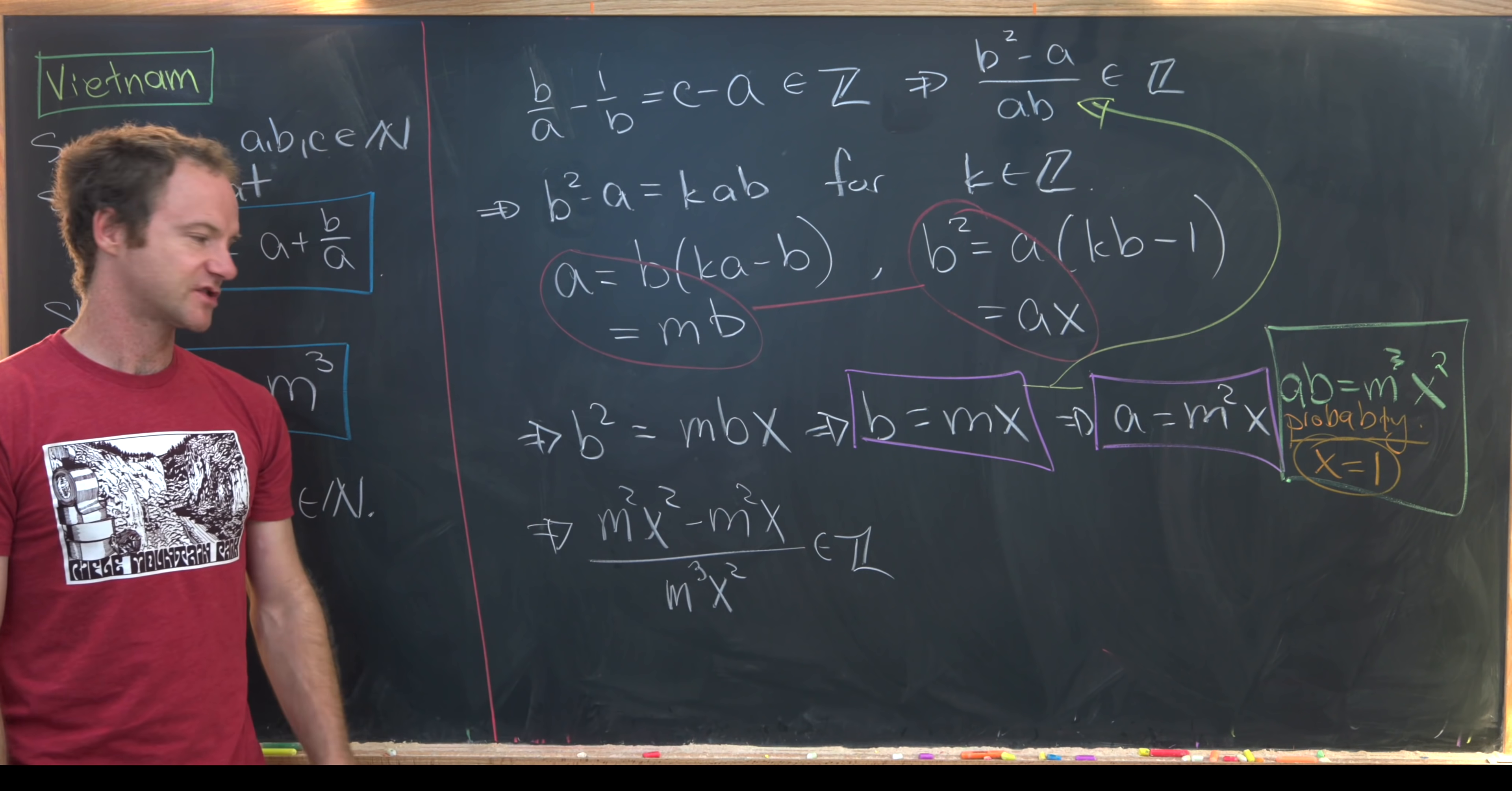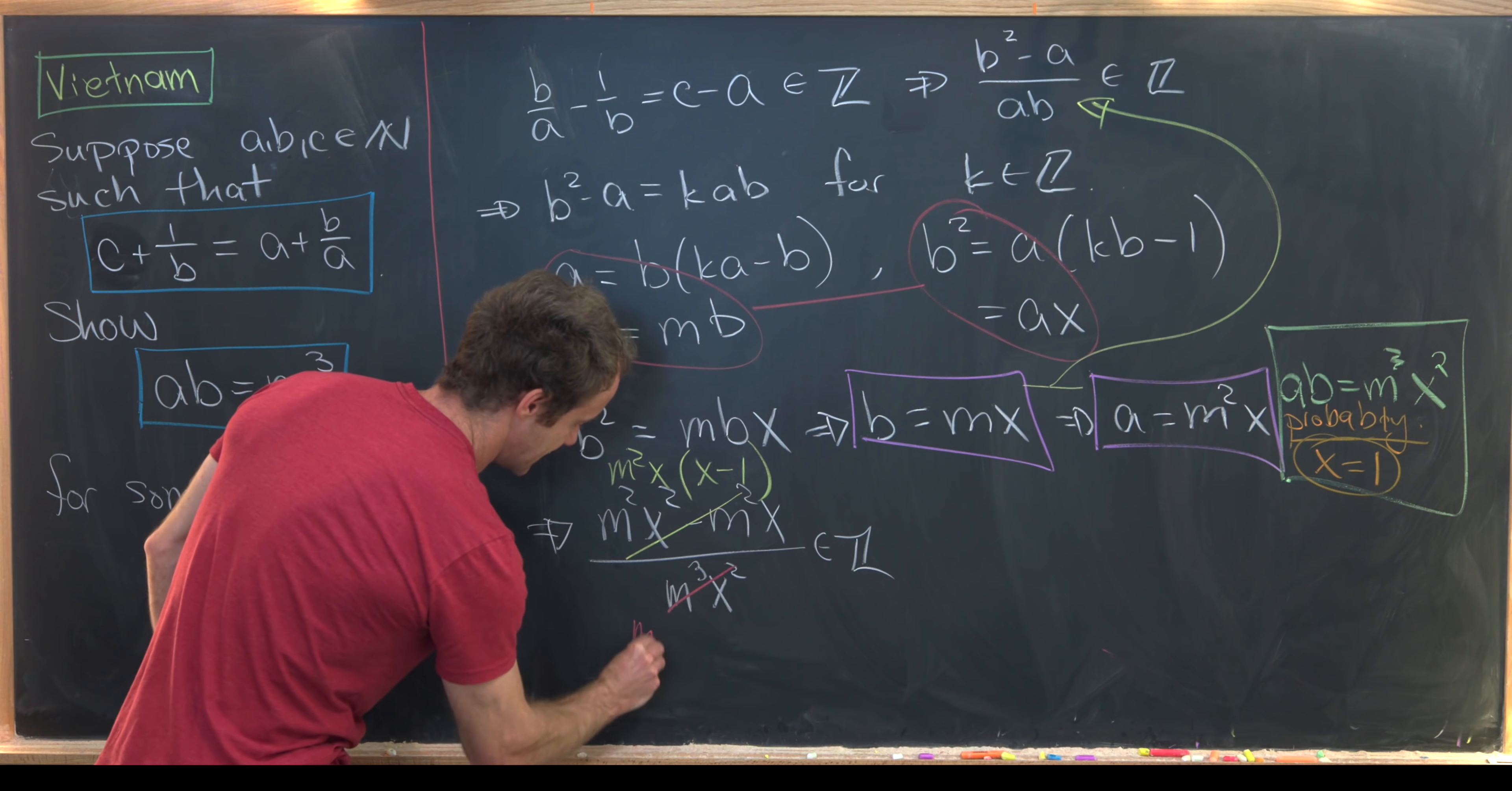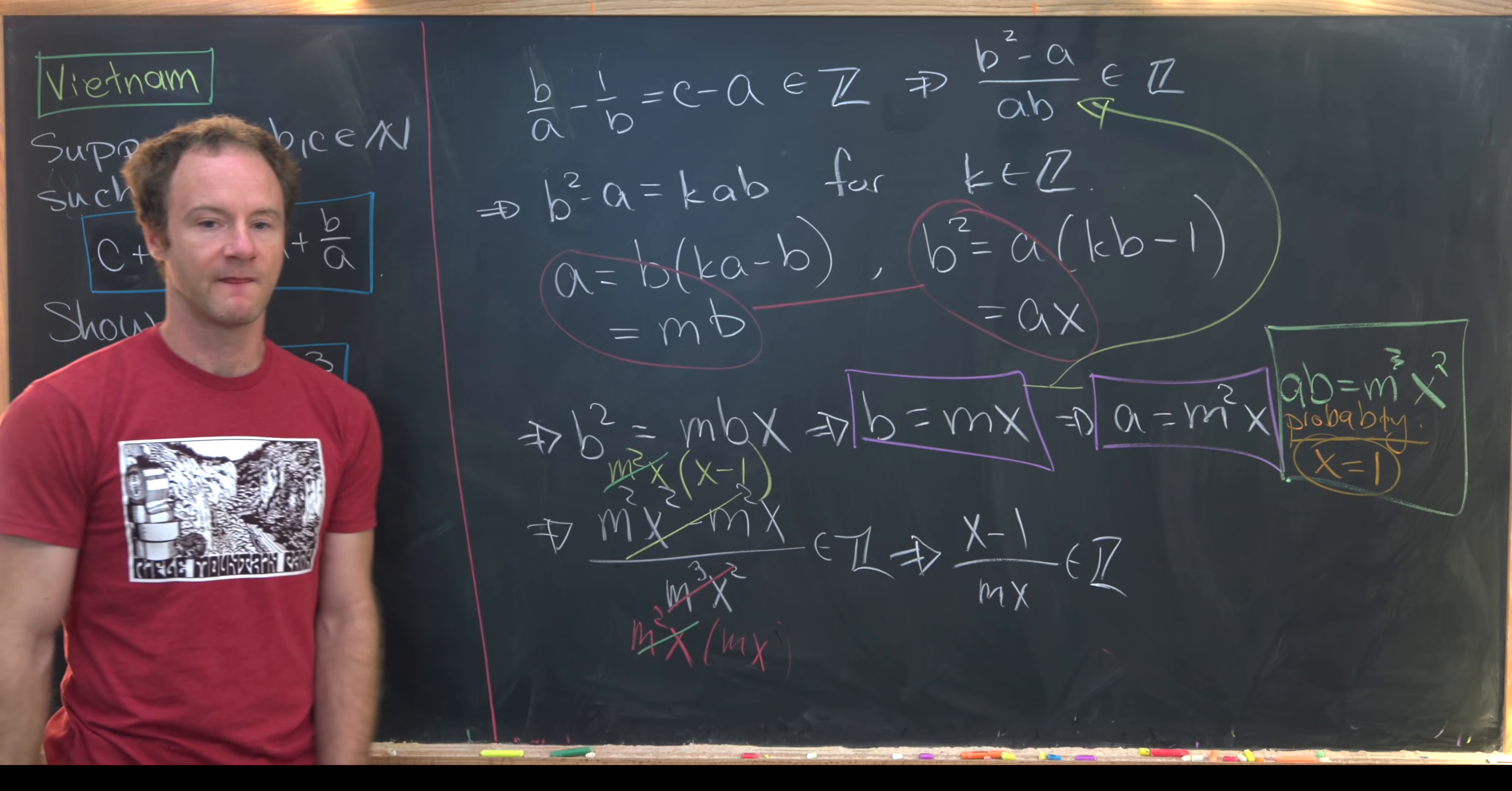But we can factor some stuff out of this and cancel. So let's see how we can rewrite this numerator via factoring. We can take an M squared X out of the numerator, and we're left with X minus 1, and then we can similarly factor an M squared X out of the denominator, and we'll be left with MX. So let's notice that this M squared X and this M squared X will cancel, and we're left with X minus 1 over M times X is an integer. Nice.